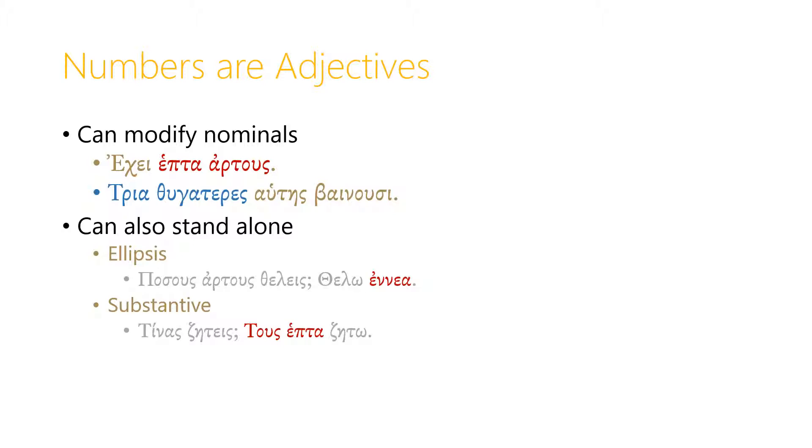On the other hand, just like other adjectives can be, numbers can be used as substantives. So if someone says, what are you looking for? We can say, the seven. I'm looking for the seven. That could be seven things or the seven people.